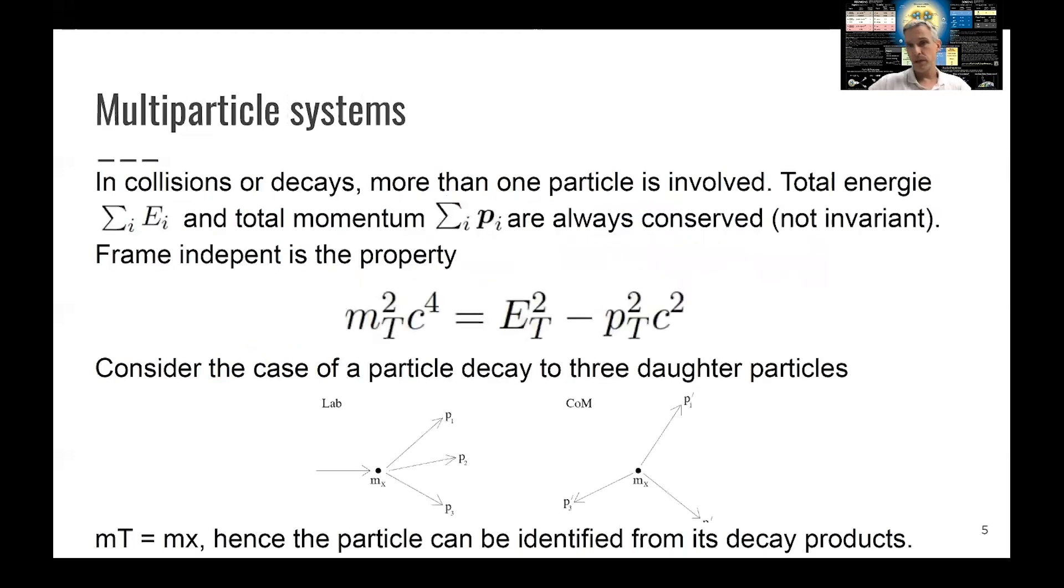So now, in particle physics, we often have the case that we are not considering just one particle and want to describe this one particle or measure it, but often the case of multiple particles which are involved in the reaction. So we can look at the total energy, just the sum of the energy of all particles, the total momentum, the sum of the momentum of all particles. And those two quantities are always conserved. They are not invariant. So be aware of the distinction between conserved properties and invariant properties.